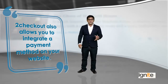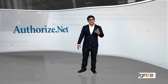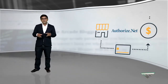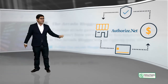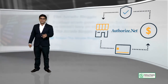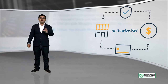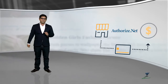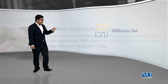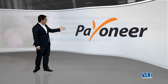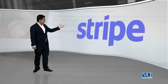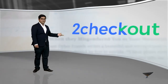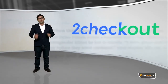Besides 2Checkout, there is another payment platform called Authorize.net. Authorize.net also gives you the option to integrate a payment method on your e-commerce website and charge through that payment method. So you have PayPal, Payoneer, Stripe, Authorize.net, and 2Checkout — so many options. Which one should you use?